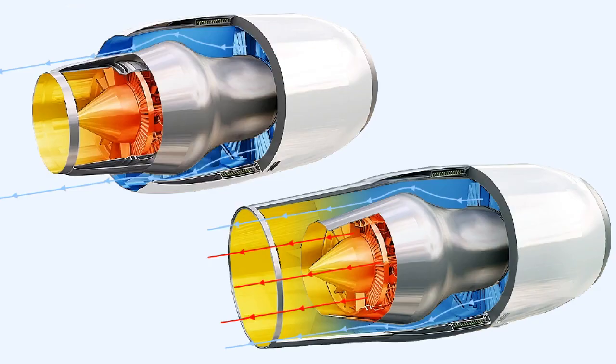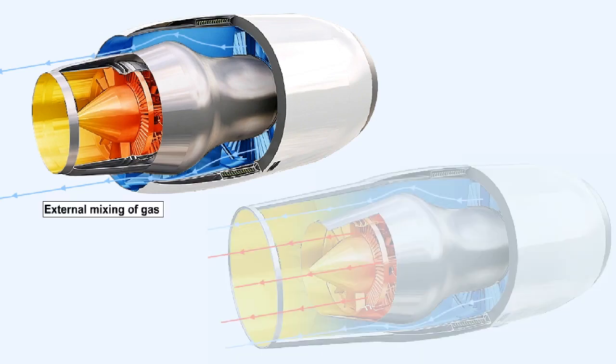This picture shows two methods which are used to exhaust the cold bypass air and the hot exhaust gases. The top illustration shows the standard method whereby the hot and cold nozzles are coaxial and the two streams mix externally.